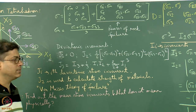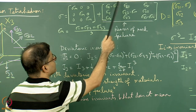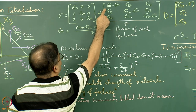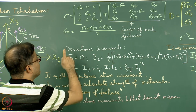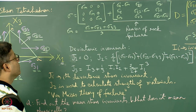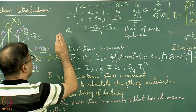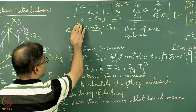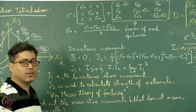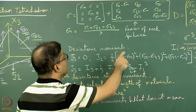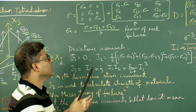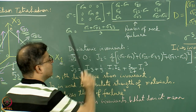The three normal stresses are divided by three, and the rest is taken accordingly. If I do a matrix addition, these two will add up and sigma 11 will come, and likewise we will get back the original stress matrix. Once we decompose the stress matrix into a mean stress component and a deviatoric stress component, we understand from rock mechanics experiments that the deviatoric stress matrix is the reason for rock failure, making it more important.